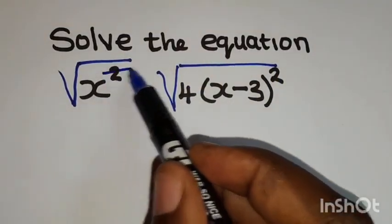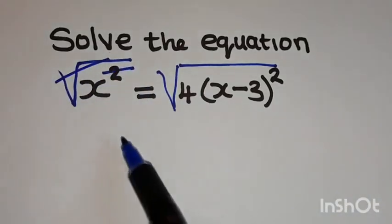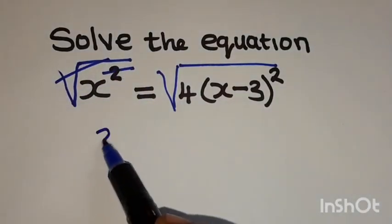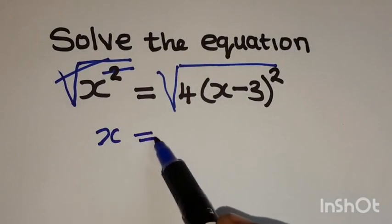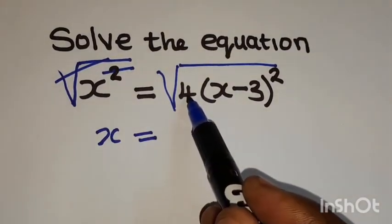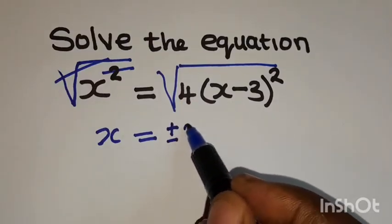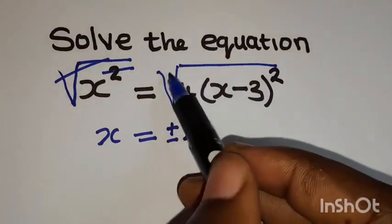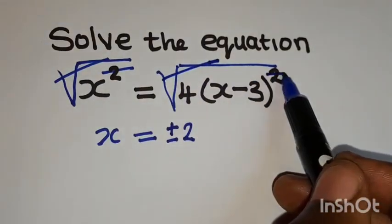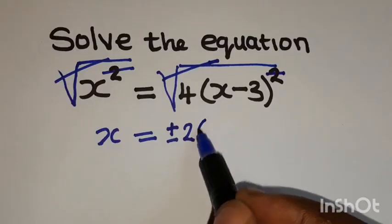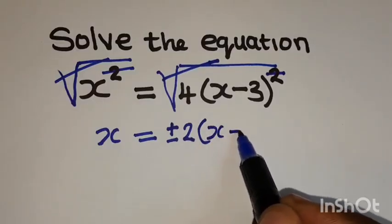Okay, so these 2 and the square root symbol go. Then we'll have x is equal to the square root of 4 is plus or minus 2. Then this symbol and this will cancel. Then we'll have x minus 3.